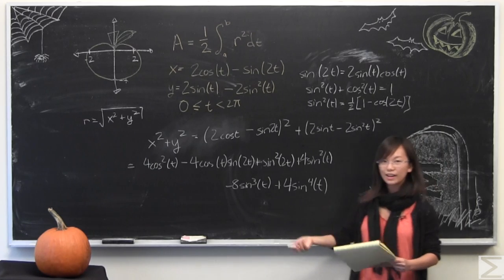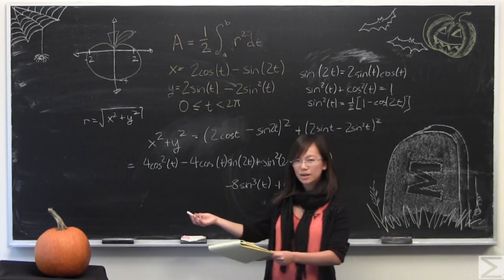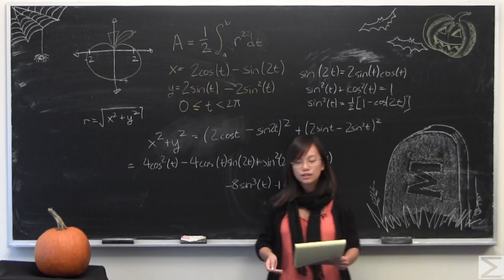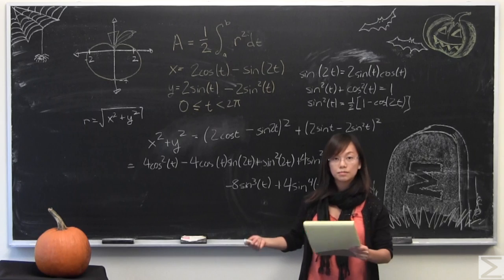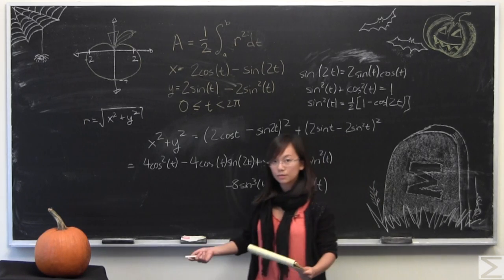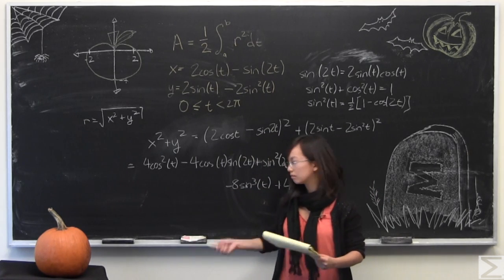So I've just taken this apart and if you look at this it looks a little messy at first but you can group the terms together such that you can use these three identities above in order to make this a much simpler expression.